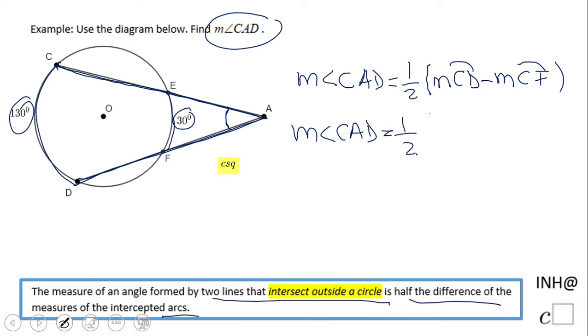Arc CD is 130, arc CF is 30 degrees. We get one half times 130 minus 30. By order of operations, one half times 100, that will be 50. The measure of angle CAD is 50 degrees.